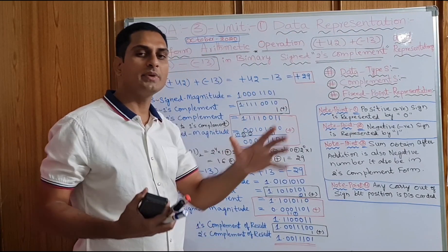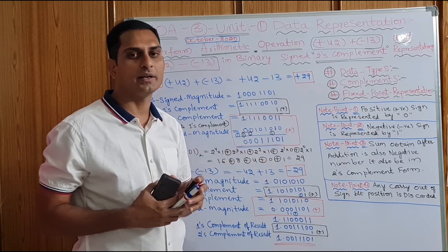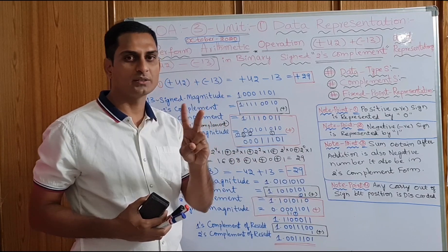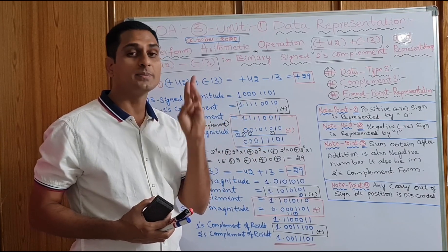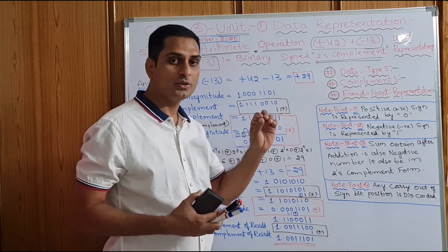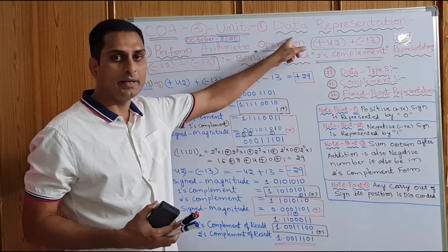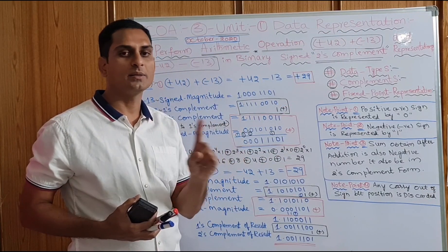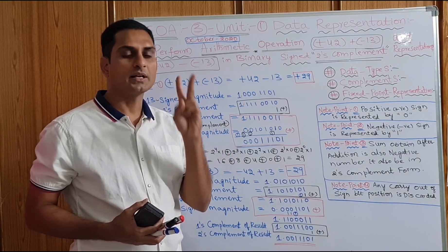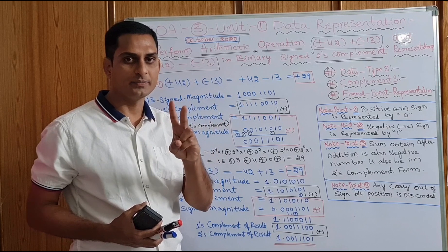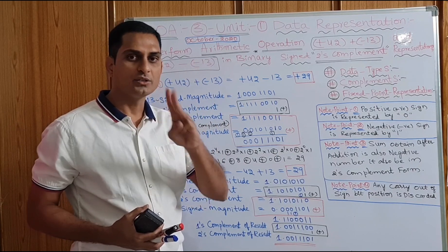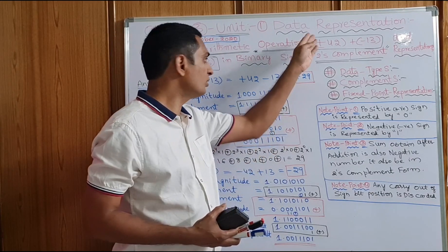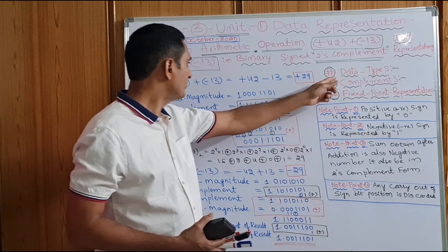Data representation: data means every raw material on the keyboard is called data. We have alphanumeric special characters — alphabets capital to small letters, numeric 0 to 9, and special characters. In the motherboard, data is represented as binary (0 and 1), octal (0 to 7), decimal (0 to 9), or hexadecimal (0 to 15).